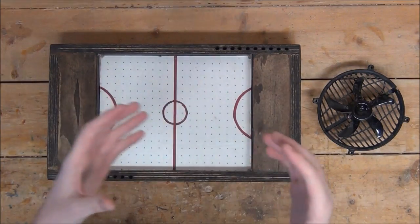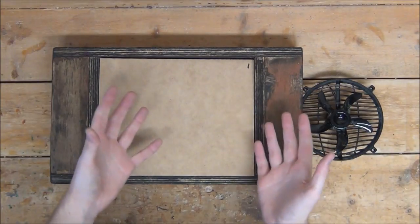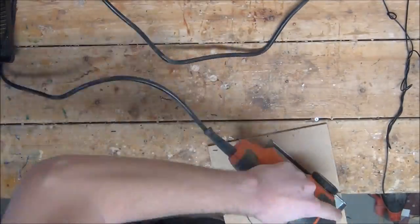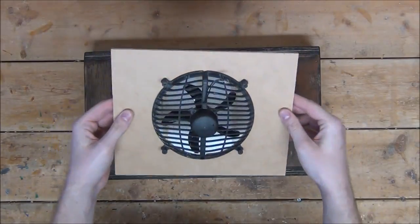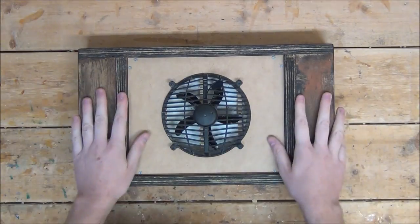I'm now going to cut out a piece of MDF that's just large enough to fit in the bottom cavity of the air hockey table, then cut a hole out of the center of it large enough for us to be able to bolt on our fan. Like this. Now we can go ahead and screw it in place. Perfect.